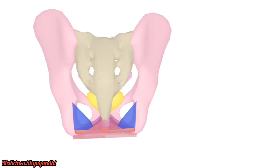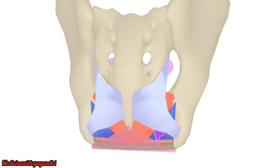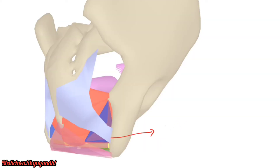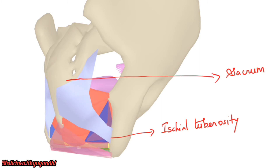Now let us come back to the pudendal canal. The sacrotuberous ligament extends from the ischial tuberosity to the sacrum. This ligament is triangular in shape and is narrower in the middle.